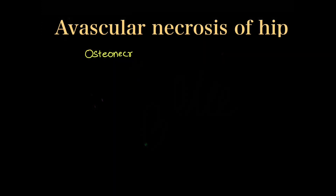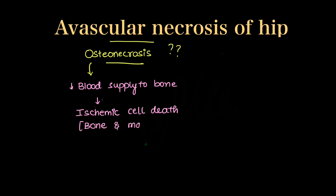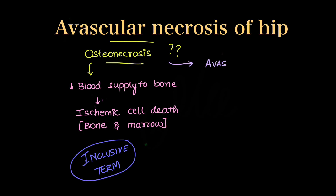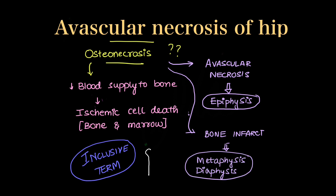What does avascular necrosis of hip mean? Is it the same as osteonecrosis? Osteonecrosis is reduction of blood supply to the bone, leading to ischemic cell death of bone and marrow. It is an inclusive term. It involves avascular necrosis, which is a subtype of osteonecrosis involving the epiphysis, and bone infarct, where osteonecrosis occurs in the metaphysis or diaphysis.